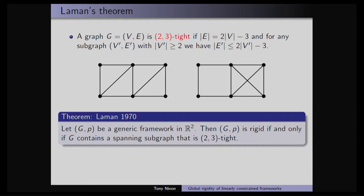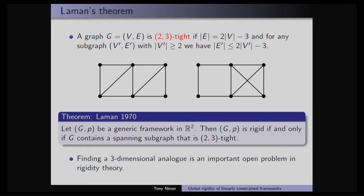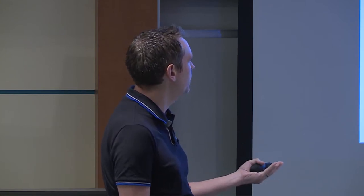These have exactly the same number of edges — they both meet the count — but I've moved this one edge across, and gone from something that's minimally rigid to something that's flexible because I've spread the edges in a bad way around the structure. The characterization of generic rigidity in two dimensions is that you're rigid if and only if you contain a spanning subgraph with this property, or you're minimally rigid if you are exactly two-free-tight. In three dimensions, it's really hard and we don't know what to do — they actually showed examples where the analogous free-six-tight statement fails.